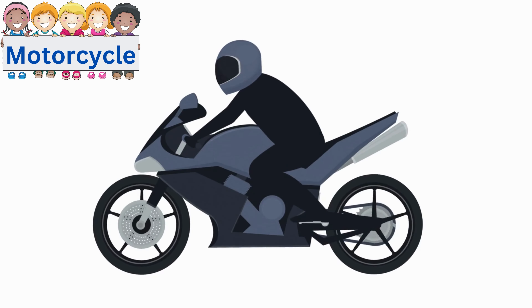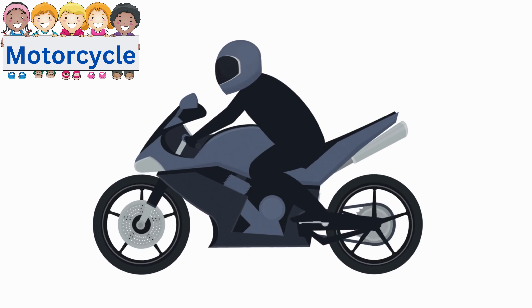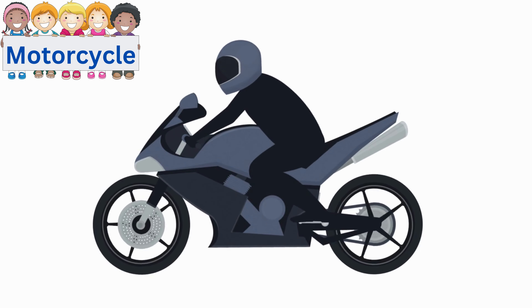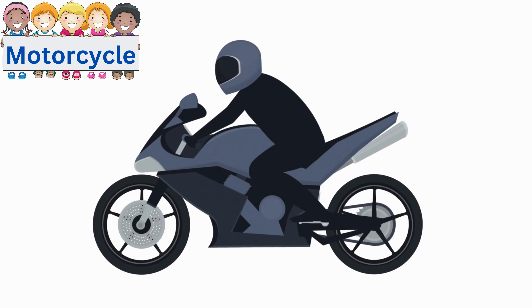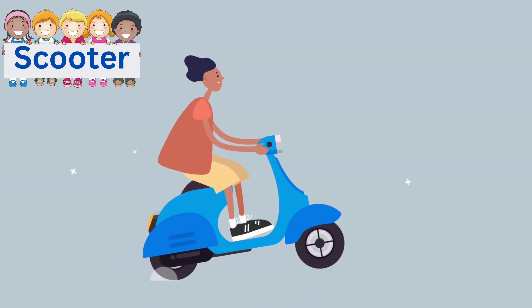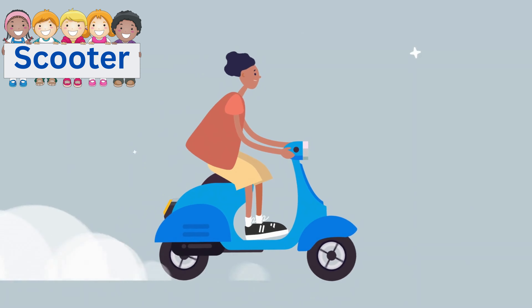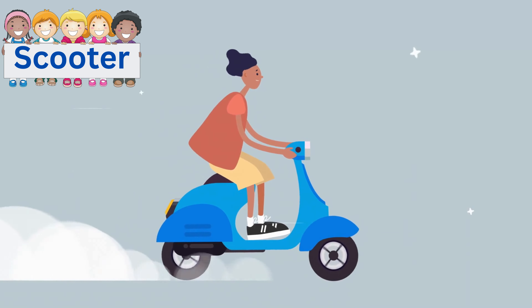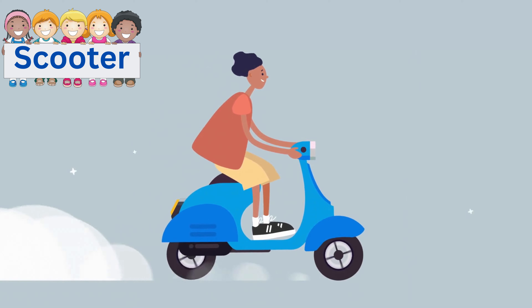A Motorcycle. A motorcycle is a two-wheeled vehicle with an engine. Motorcycles are a common form of transportation throughout the world. A Scooter. A scooter is a small light motorcycle which has a low seat.